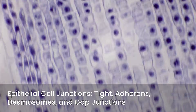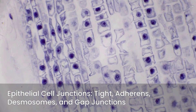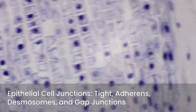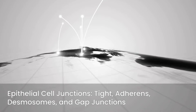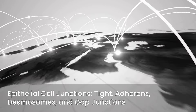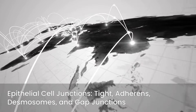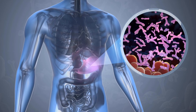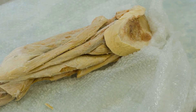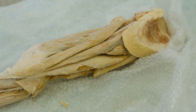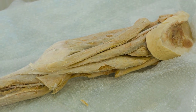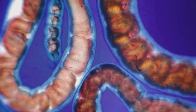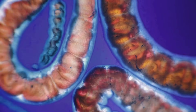Tight junctions create impermeable barriers. Adherence junctions provide strong adhesion, and desmosomes offer robust mechanical strength. Gap junctions allow for direct cell-to-cell communication. For your exams, focus on the specific locations and functions of these different epithelial types. For example, simple squamous epithelium is ideal for diffusion in the lungs, while columnar epithelium with microvilli is perfect for absorption in the intestines.